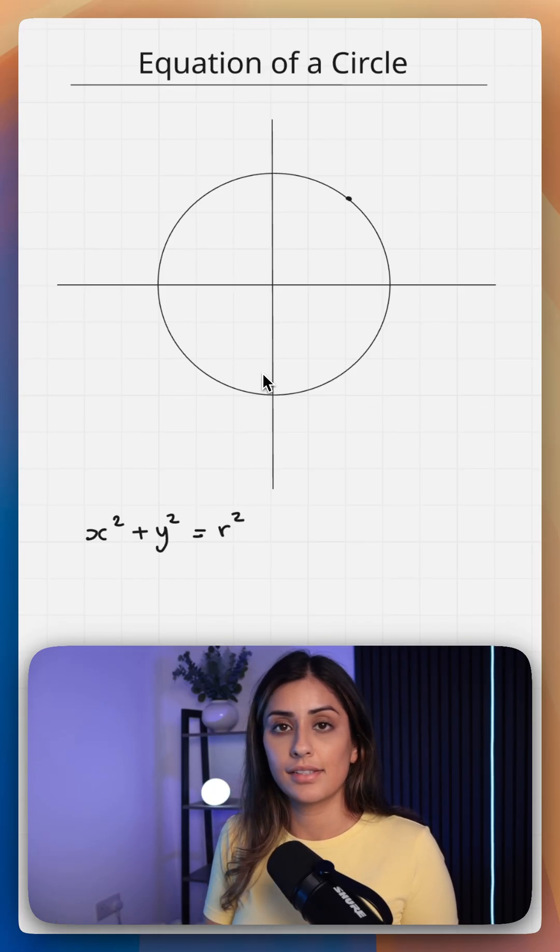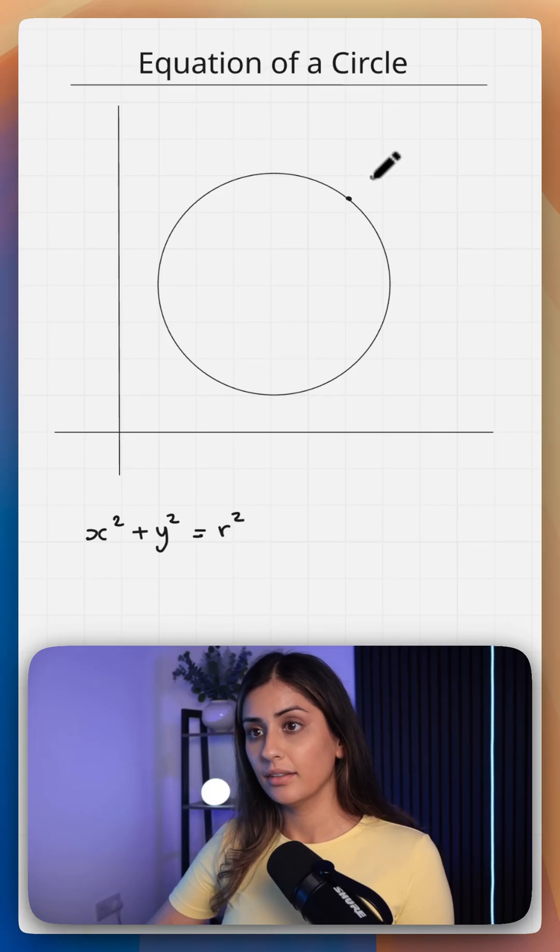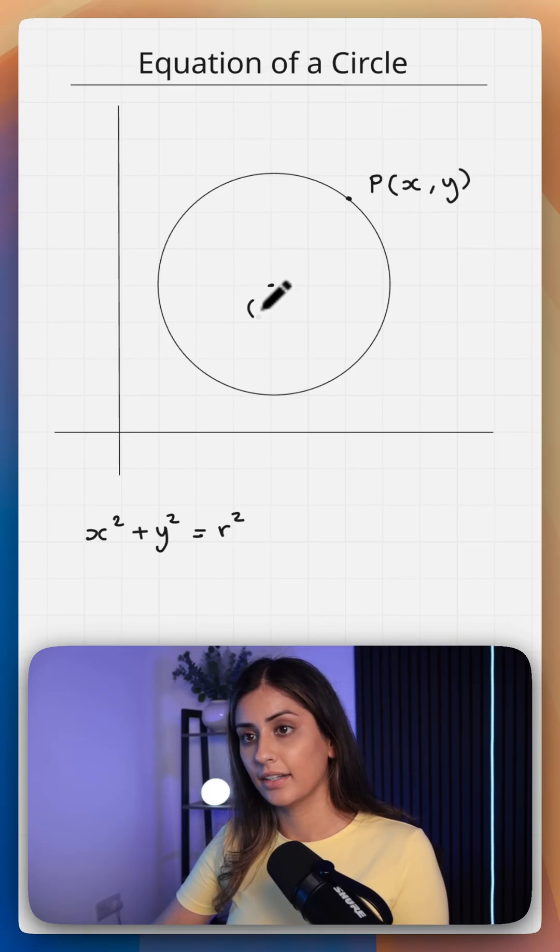However, what happens when the circle center is not at the origin? Let's call this point here xy and let's call our center ab.